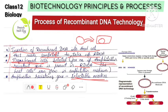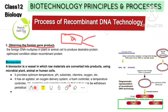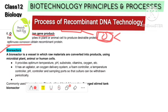The next step is obtaining the foreign gene product. The transformed host cells are multiplied under optimized conditions. We scale up production using a bioreactor. A bioreactor is a large vessel used to culture the host cells and produce the desired protein product.